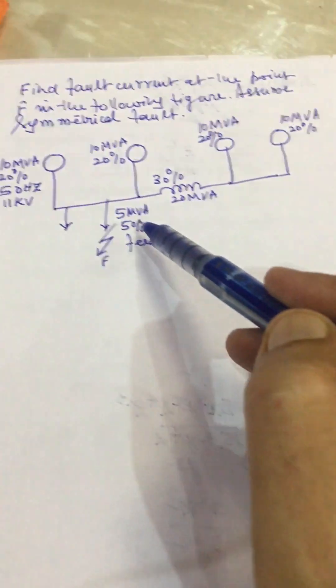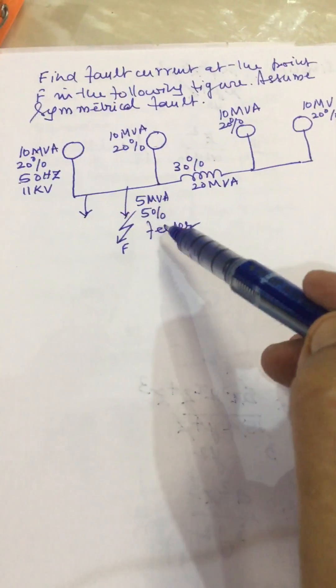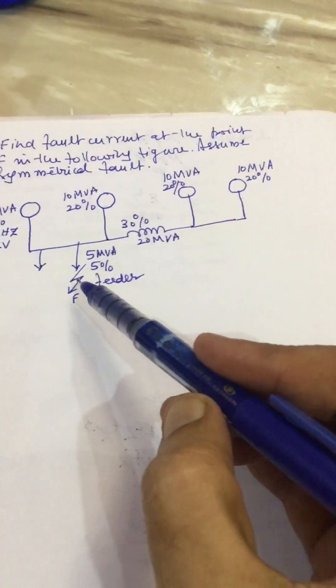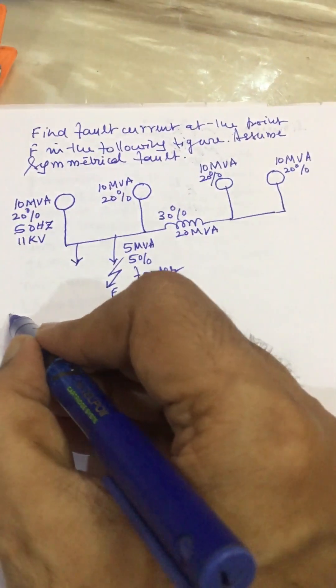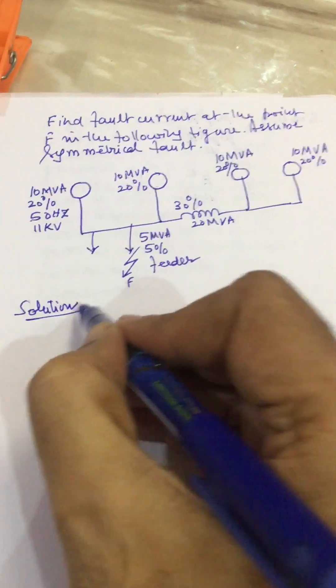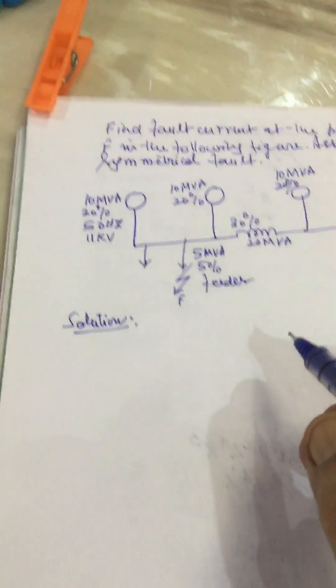And this is our reactance 30 percent reactance at 20 MVA and this is our feeder 5 MVA, 5 percent feeder. Now fault takes place at the point F, we have to find out the fault current. We can proceed to solve this problem as follows.